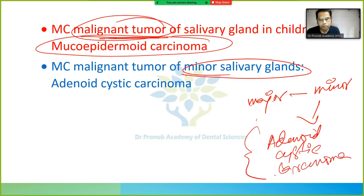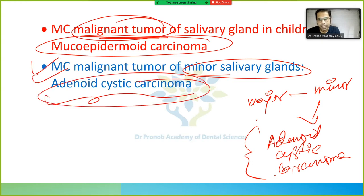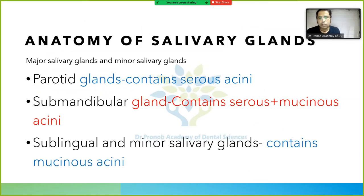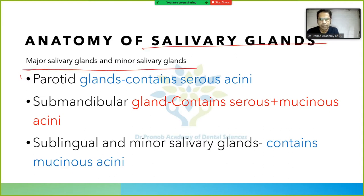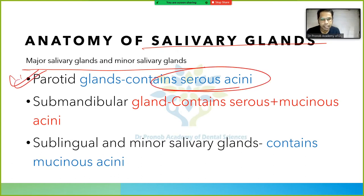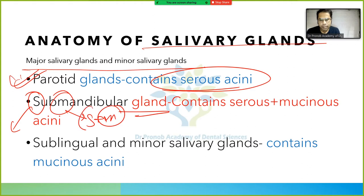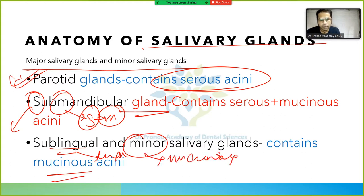Regarding anatomy: major salivary glands include the parotid, which contains serous acini, and the submandibular gland, which contains serous plus mucinous acini — remember submandibular has both 'S' and 'M.' The sublingual gland contains only mucinous acini.